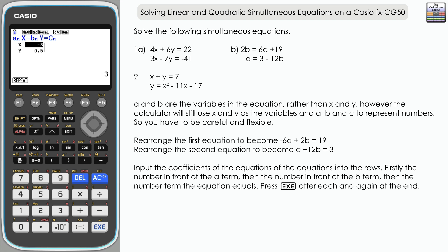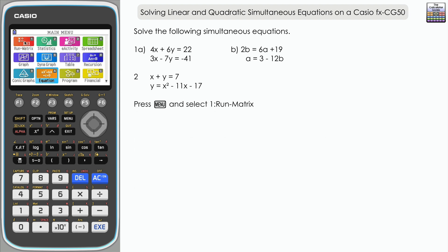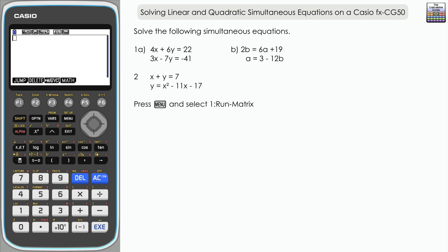We're actually going to do that in Run Matrix, which is the primary mode — menu and then 1 for Run Matrix. Like part 1b, there is a little bit of non-calculator work we need to do before we input this. We've got x plus y equals 7, which is the linear equation, and then the quadratic is y equals x squared minus 11x minus 17.